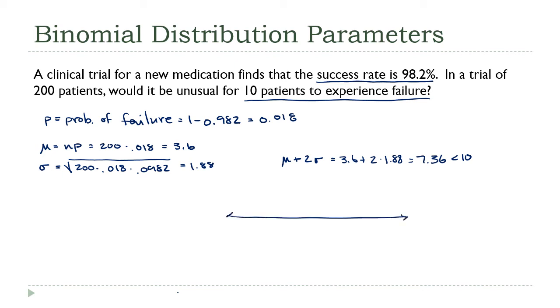10 is greater than 7.36. So 10 is outside of our window. We've got to do a quick sketch. We've got the mean here, 3.6, the mean plus two standard deviations is here, 10 is over here somewhere. 10 is outside of that interval, so yeah, I would consider having 10 patients fail to be an unusual result.